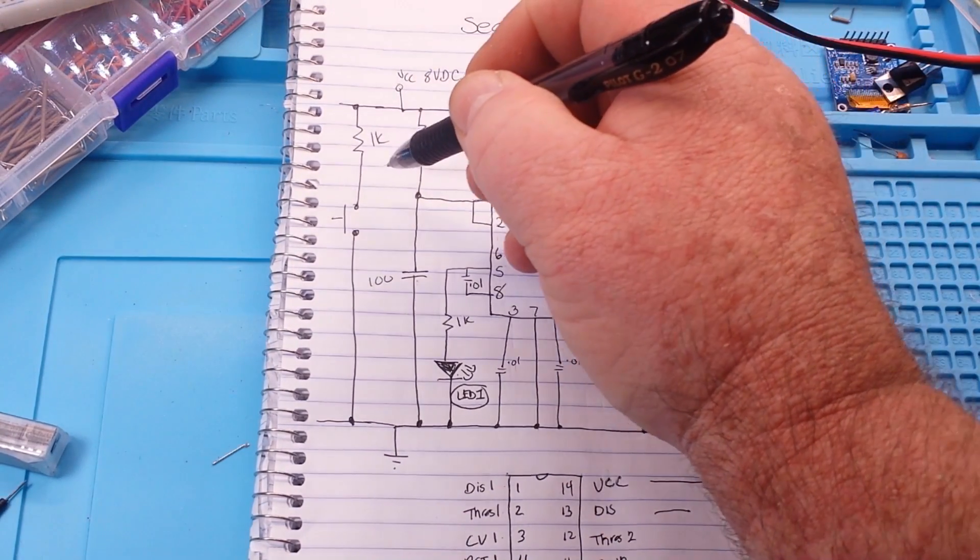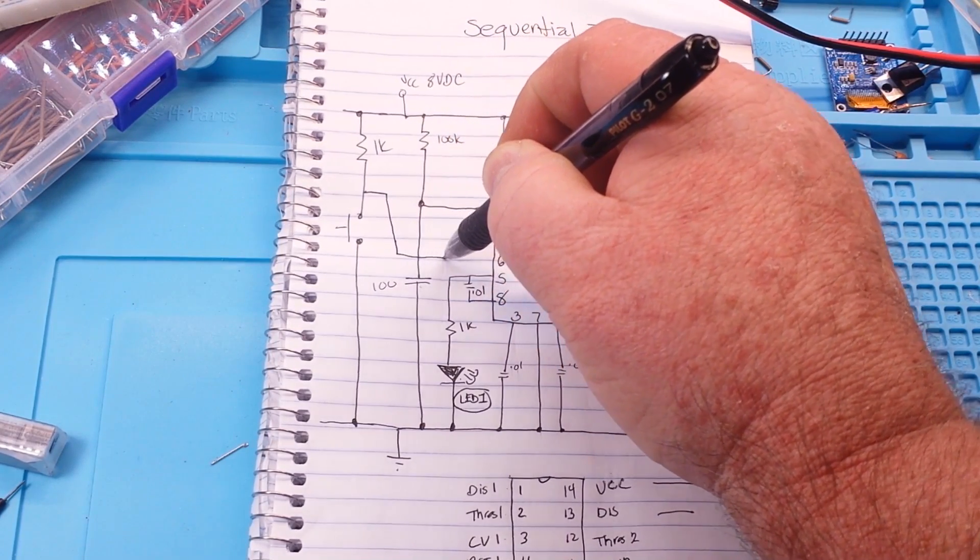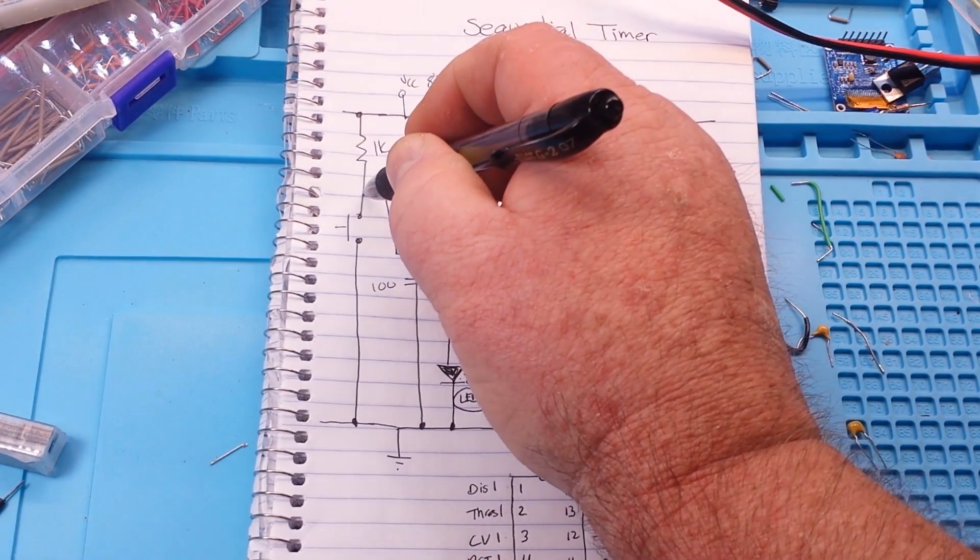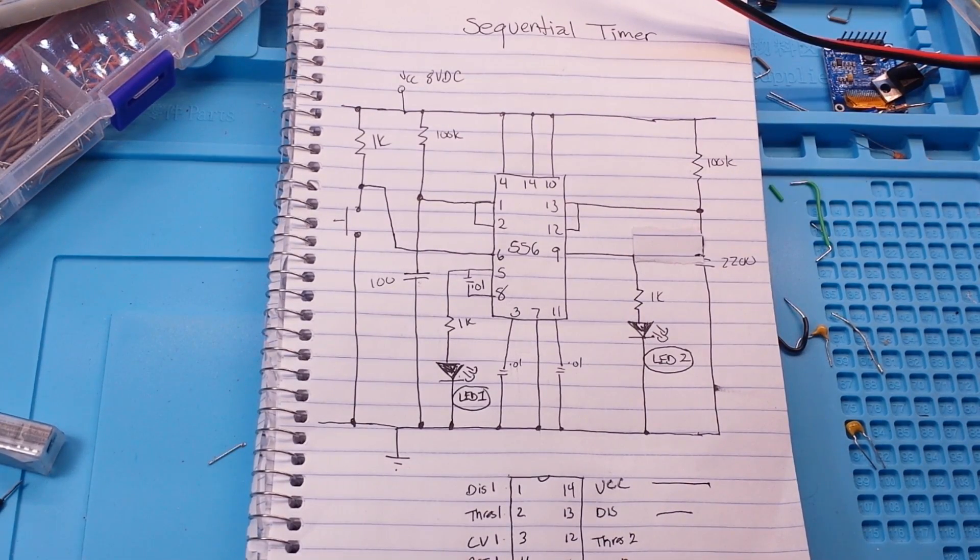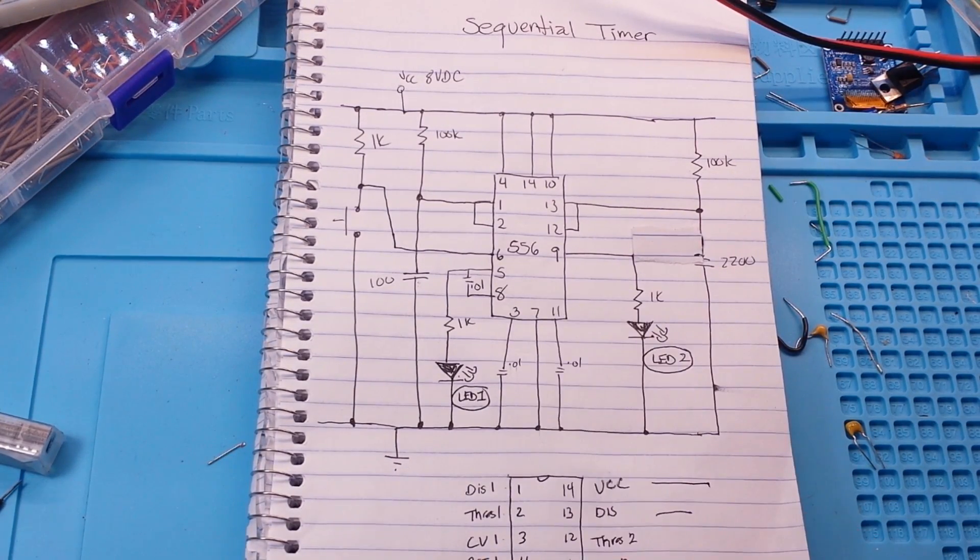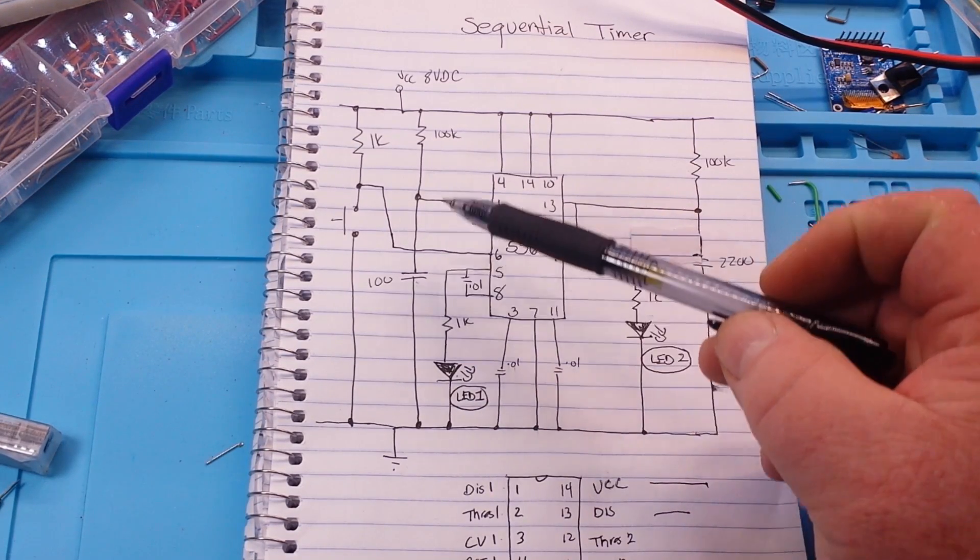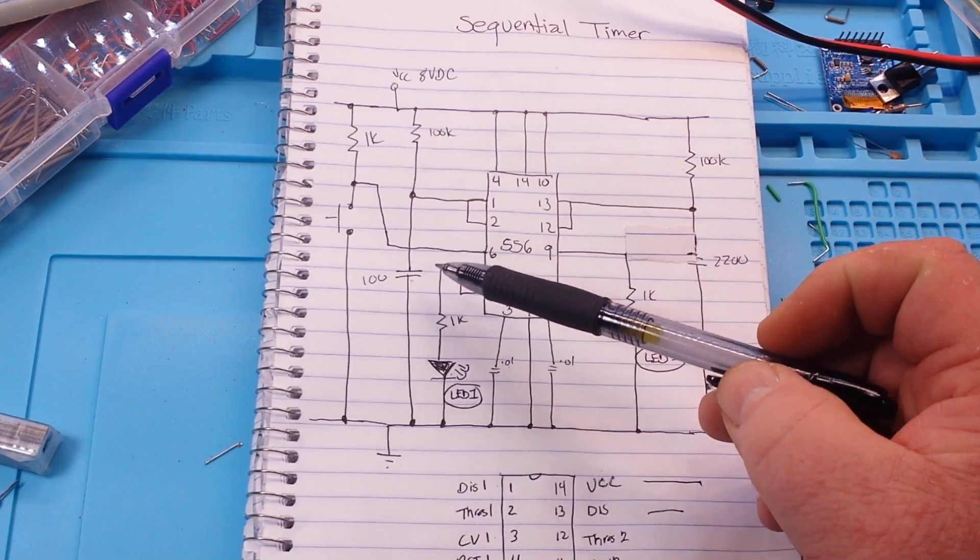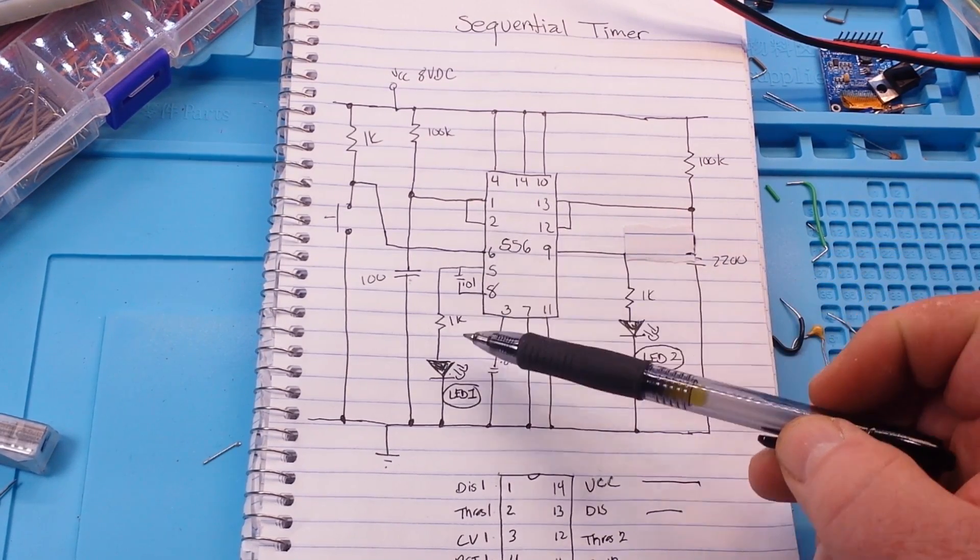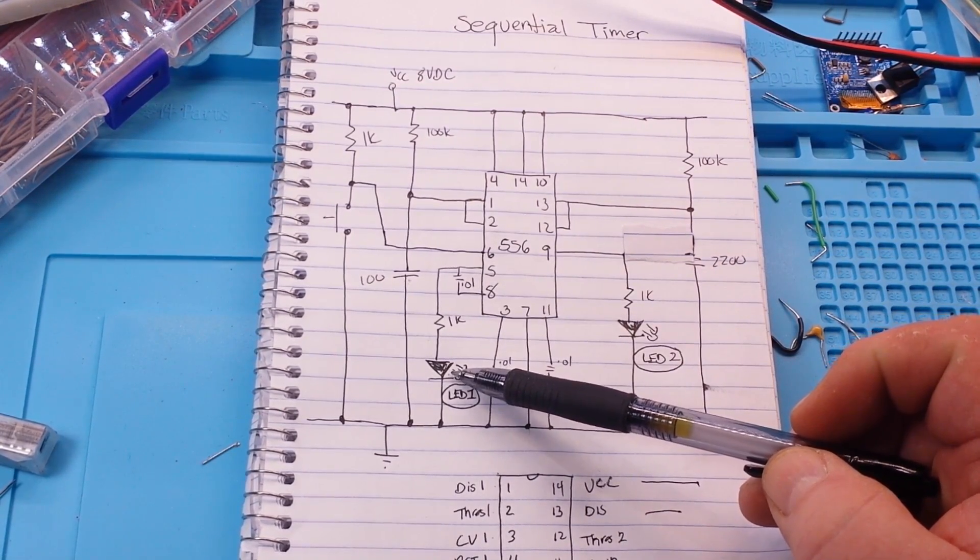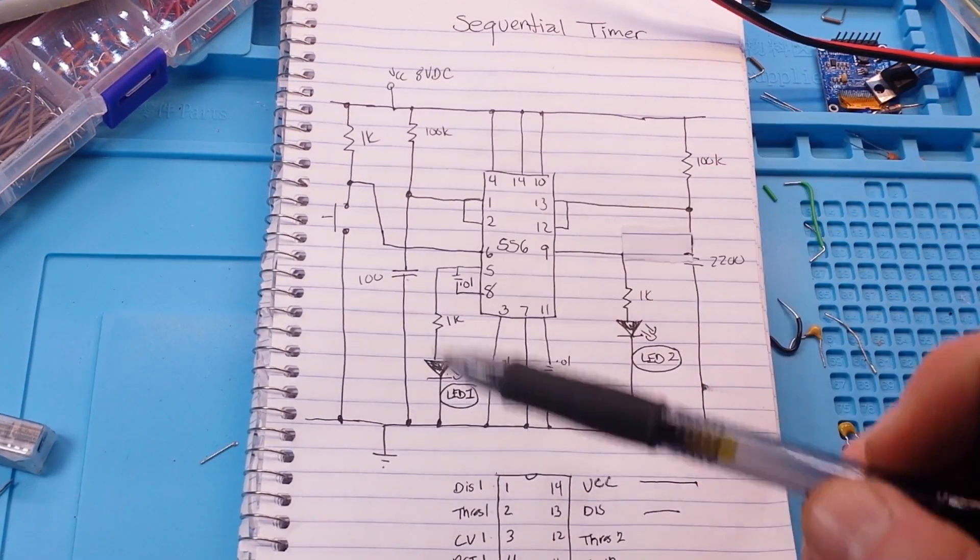That goes to pin six. Pin six is trigger number one. So what is going to happen when you press this button? This capacitor, which is charged up, is going to discharge through our threshold and control voltage and light this LED for a certain period of time based on your RC here.